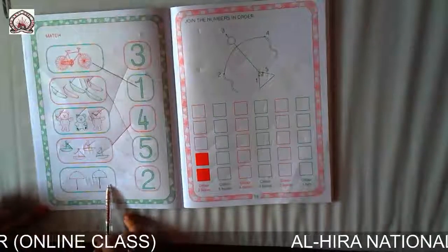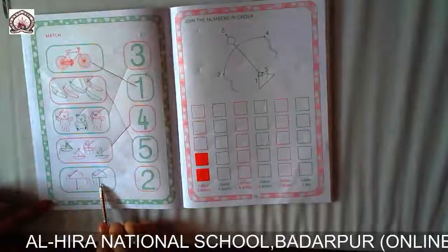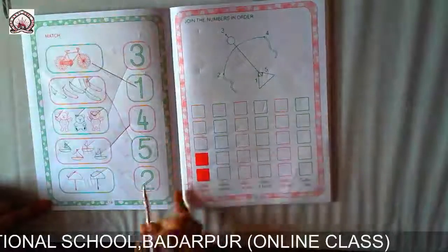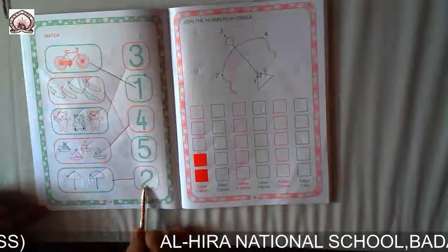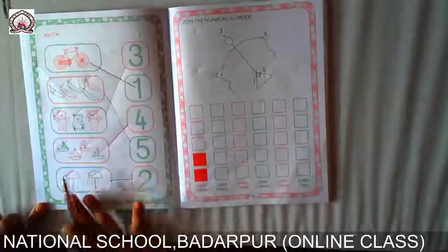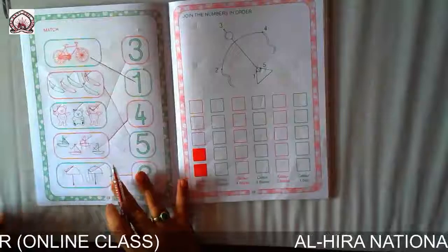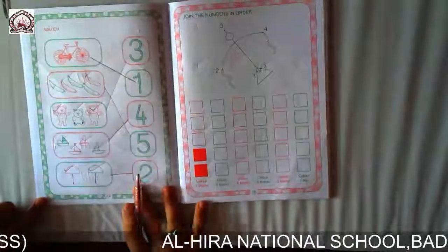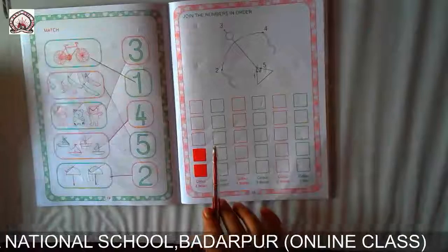How many umbrellas can you see here? One, two — two umbrellas. On the right hand side, where is two? This is two. So put a line from this box to this box, matching two umbrellas with the number two. So this one is finished. You are very smart and intelligent children — I hope you understood how to match it. Do this at your home, but use pencil.